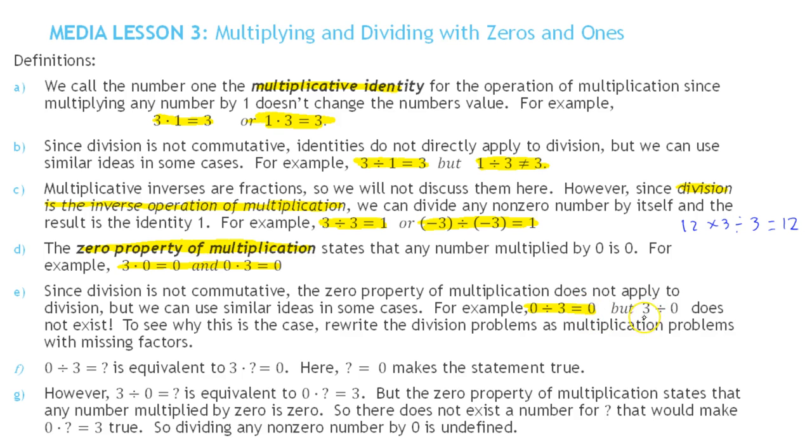Here's a quick justification of why that is the case. We had said before we could write 0 divided by 3 equals some number. Using a missing factor, this is saying 3 times what number equals 0? What number could you multiply 3 by to make the question true? And the result is 0.